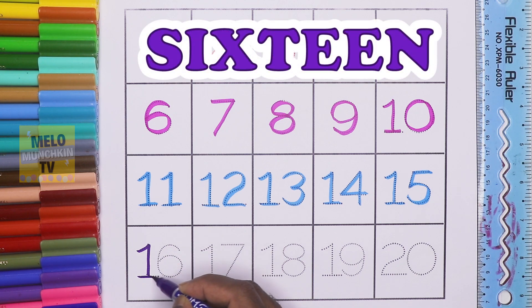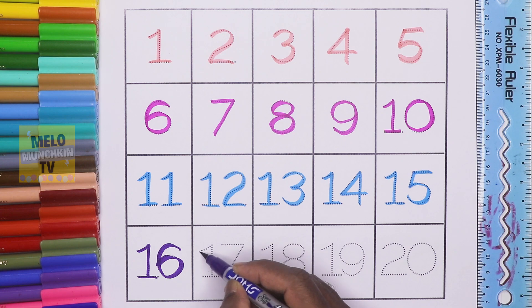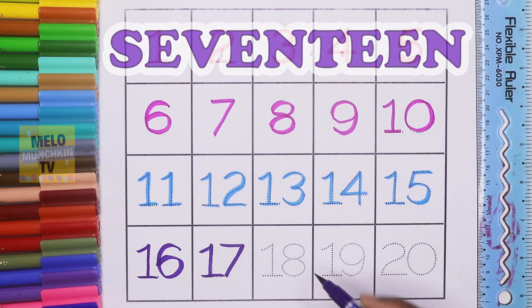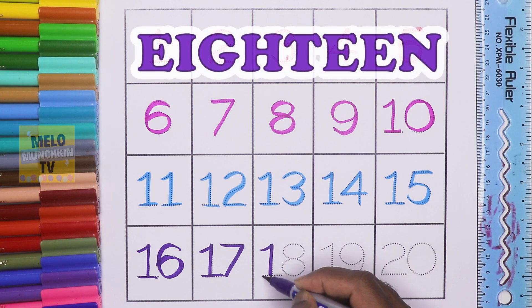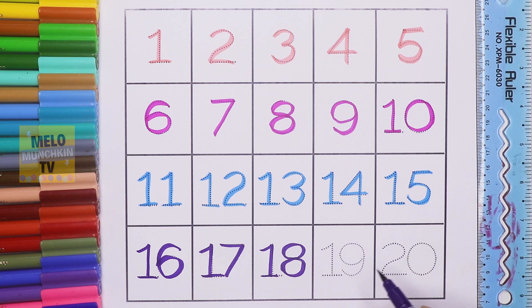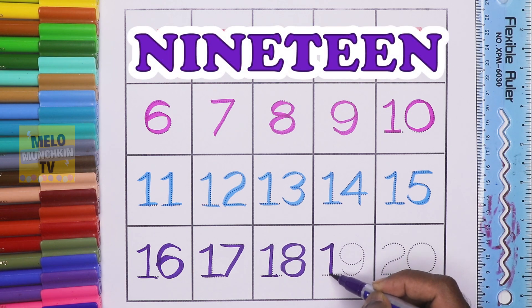Sixteen, S-I-X-T-E-E-N, 16. Seventeen, S-E-V-E-N-T-E-E-N, 17. Eighteen, E-I-G-H-T-E-E-N, 18. Nineteen, N-I-N-E-T-E-E-N, 19.